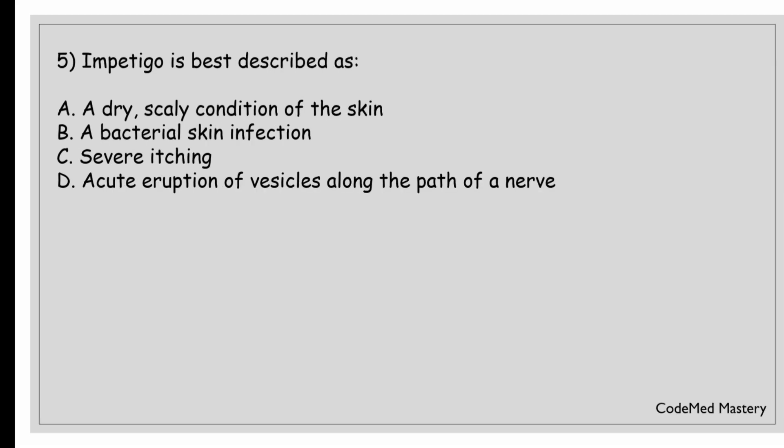Next question: impetigo is best described as: option A, a dry scaly condition of the skin; option B, a bacterial skin infection; option C, severe itching; option D, acute eruption of vesicles along the path of the nerve. The right answer is option B, a bacterial skin infection. Impetigo is a highly contagious skin infection caused primarily by Staphylococcus aureus and sometimes Streptococcus pyogenes bacteria.